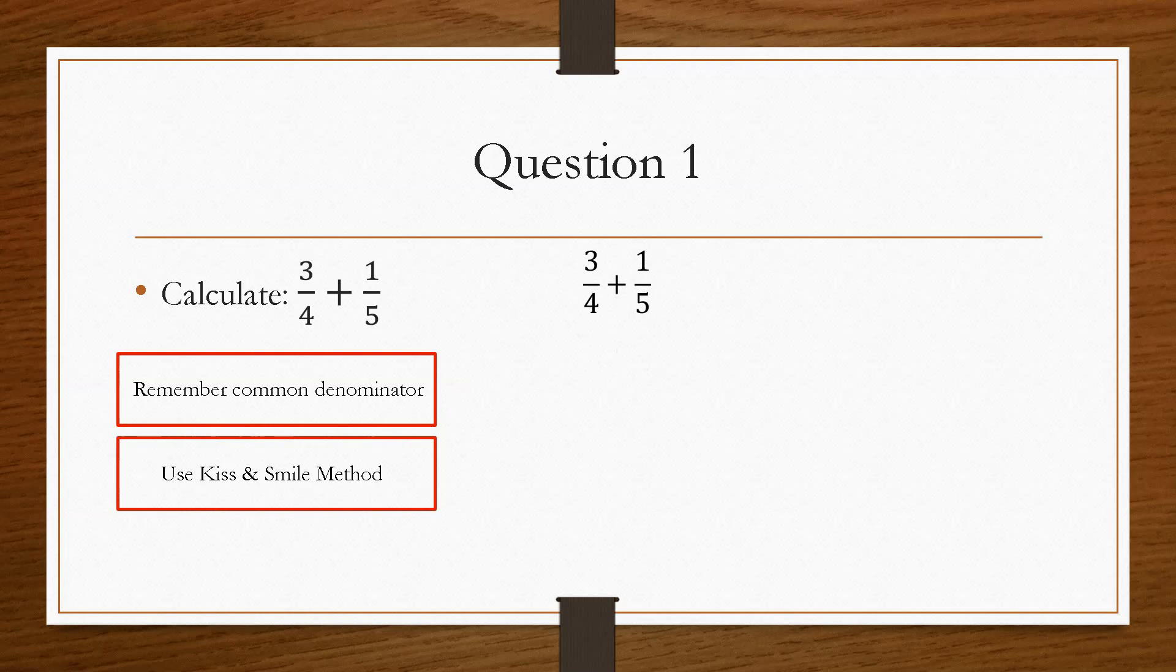And the way that Kiss and Smile works is you cross multiply and then you times the two numbers on the bottom by themselves, just like the arrows on the screen. I'll show you that one more time. So you cross multiply and then times the 4 and the 5 together.